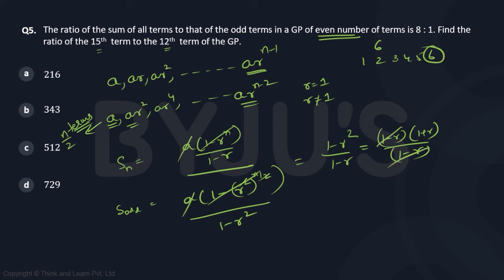So then you basically say that 1+r, the ratio is 8:1, or r equals 7. If r equals 7, then the 15th term is ar¹⁴ divided by the 12th term ar¹¹. So this becomes r³. r³ is 7³, which is 343.